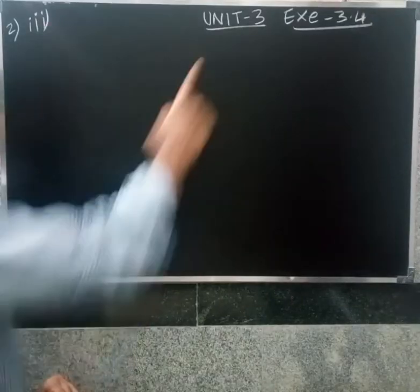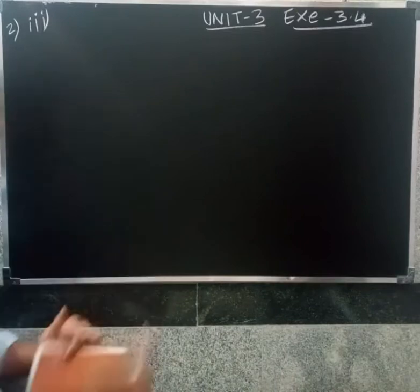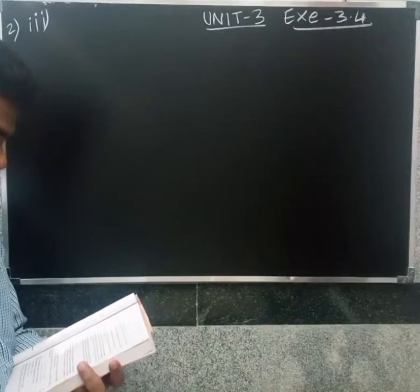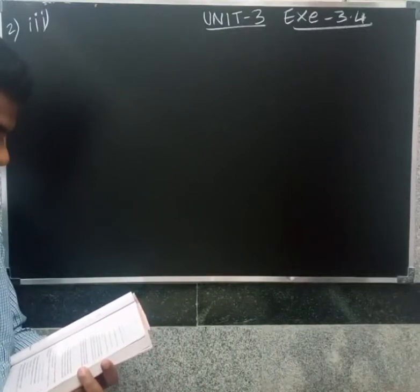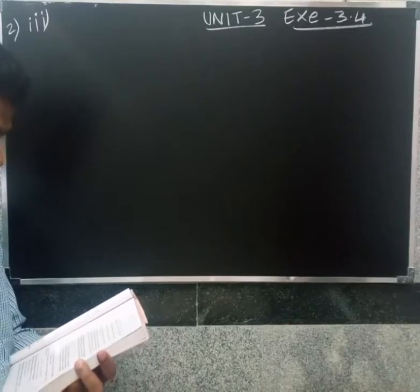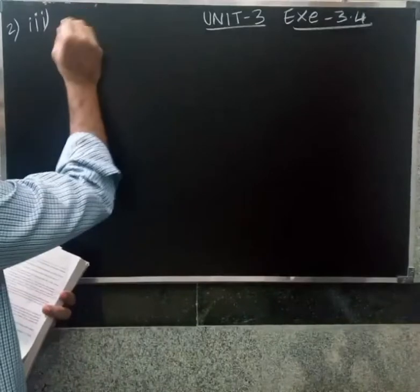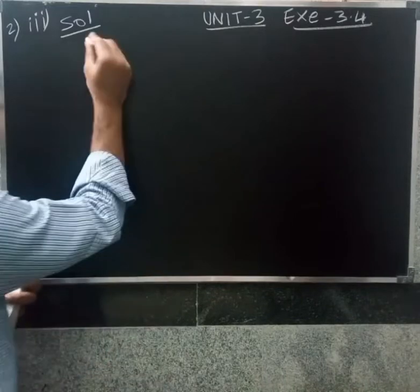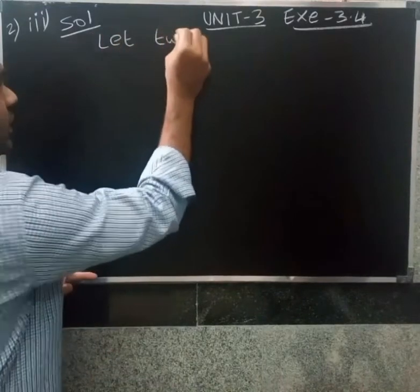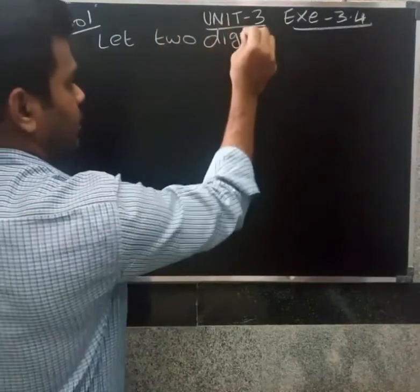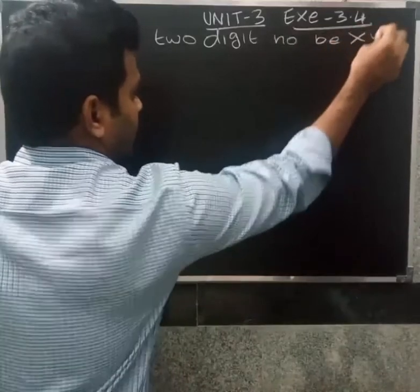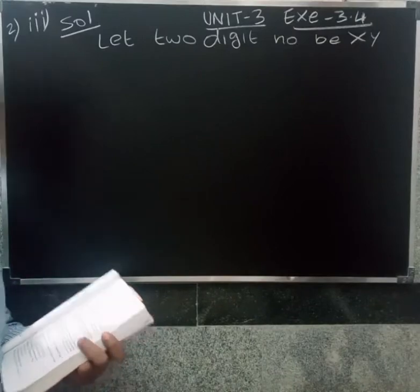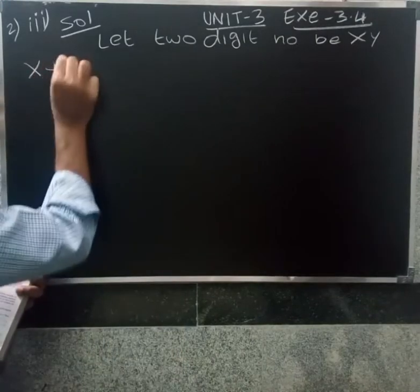Welcome friends. The sum of a two-digit number is nine. Also, nine times this number is twice the number obtained by reversing the order of the digits — find the number. So, let the two-digit number be xy. Since the sum of the digits is nine, x plus y equals nine.